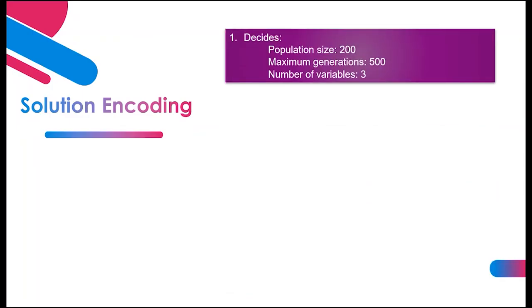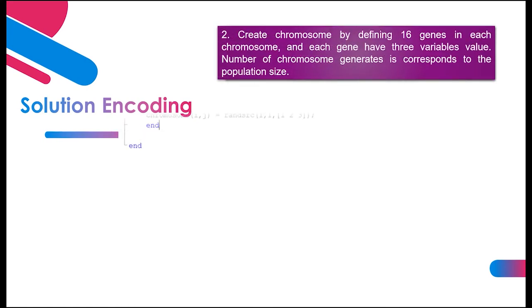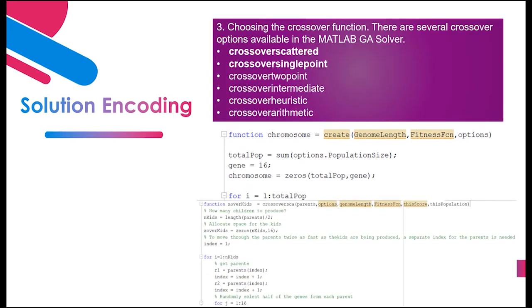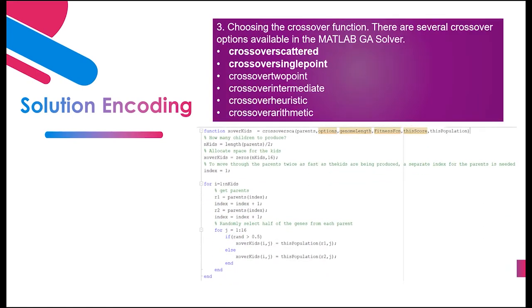Firstly, the population and number of generations are decided as shown. The number of variables in this case is three colors. Then chromosomes are created corresponding to the number of populations. Each chromosome consists of 16 genes which represent 16 vertices, and the value of genes vary from one to three, representing three colors.